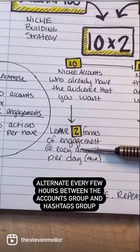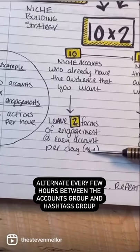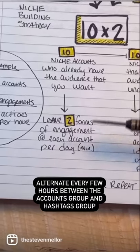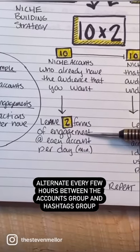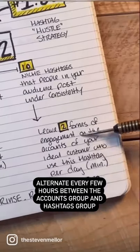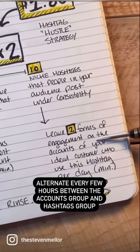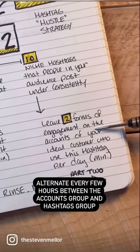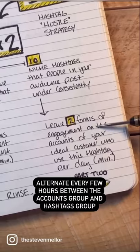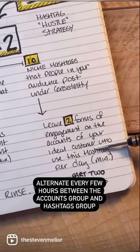You're going to leave two forms of engagement on each account per day — which is a comment, a like, a share, a save. Then you're going to pick a piece of content under each hashtag and leave two forms of engagement there.